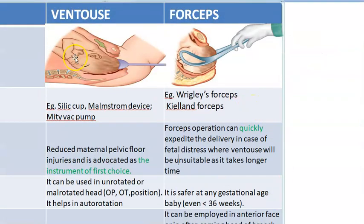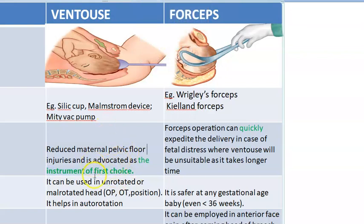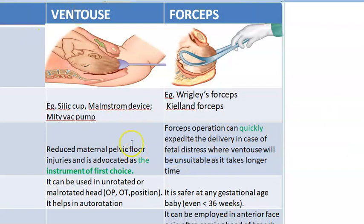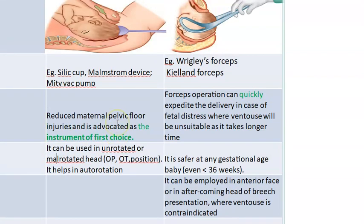Here we are looking at only the differences between ventouse and forceps. Ventouse or vacuum is the instrument of first choice - forceps comes second. However, forceps can quickly expedite the delivery because creating vacuum takes a little more time. But handling forceps is quite tedious unless you are very skilled, because you have to put the left one and then the right one.